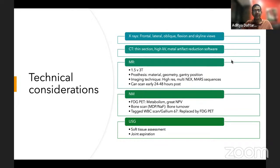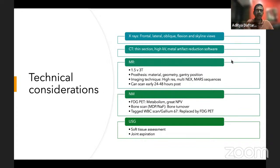Where the joint is within the gantry matters. With a knee, you can bring it to the middle of the gantry circle, which reduces artifact. With a hip and a shoulder it's harder to do that, so you may get more artifacts.